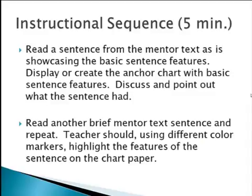You'll start by reading a sentence from the mentor text as is, showcasing the sentence features. Display or create the anchor chart including definitions of these features, and discuss and point out what the sentence had. Repeat another brief mentor text sentence. Teachers should, using different color markers, highlight the features of the sentence on the chart paper. This color coding will help students by giving them a visual clue and letting them know that the chart is there for them to use when they are stuck.